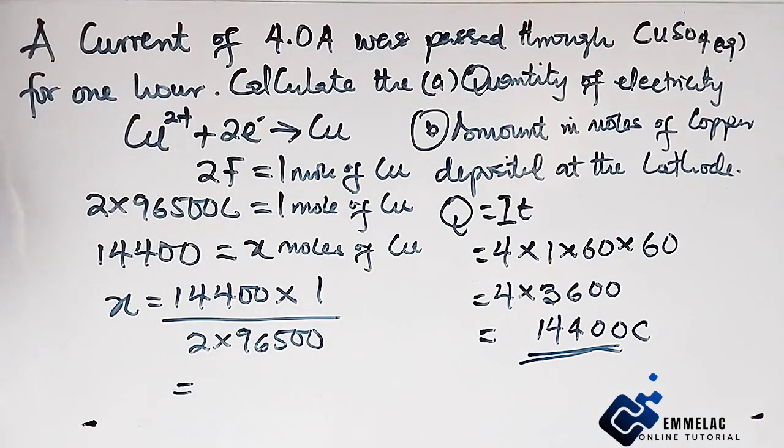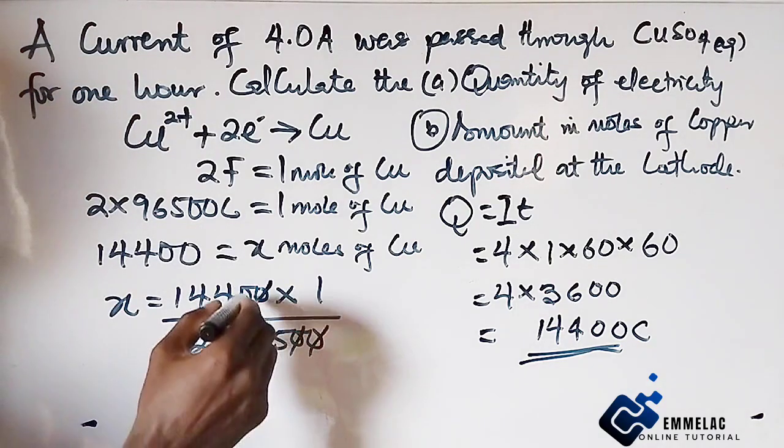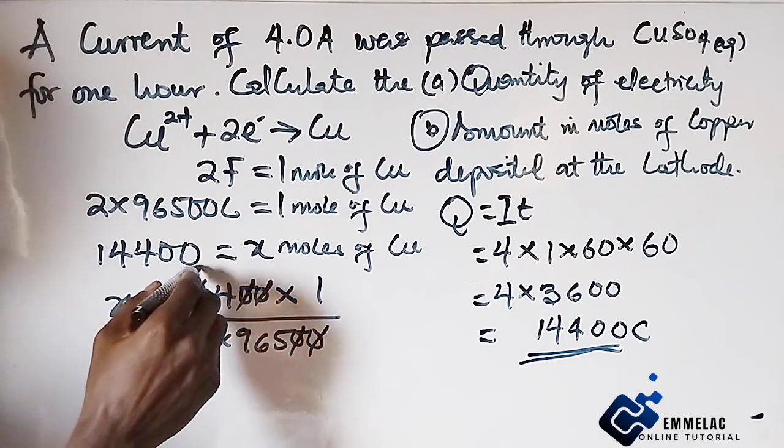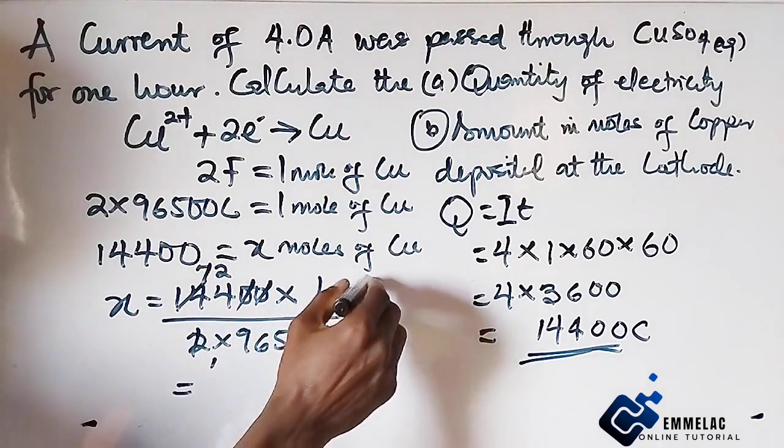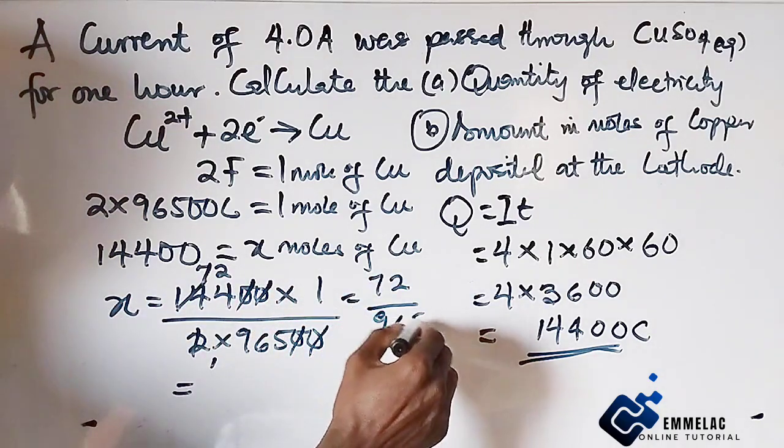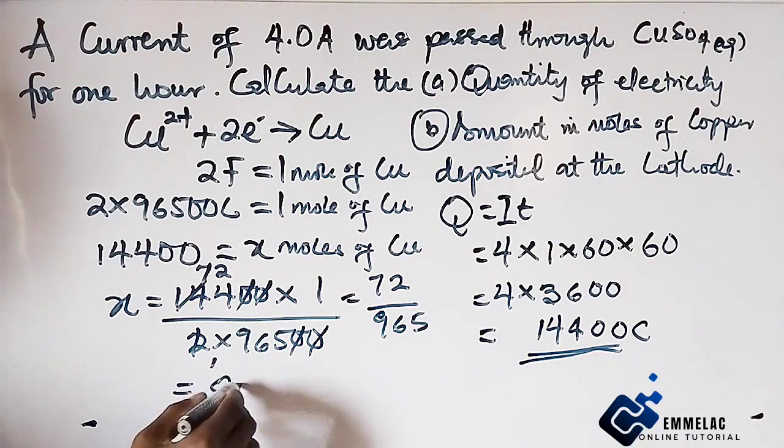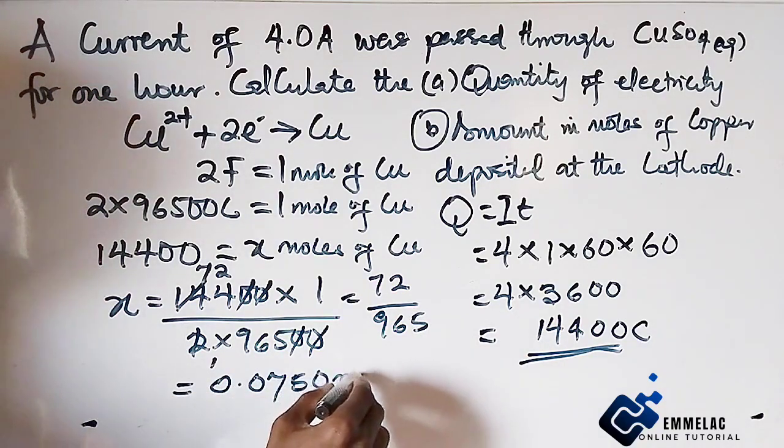Punching our calculator here, we cancel this, we cancel this. 2 here, 1, 2 here, 72. Now the order of this is 72 divided by 965. Punching our calculator, we have 0.0750 mole.